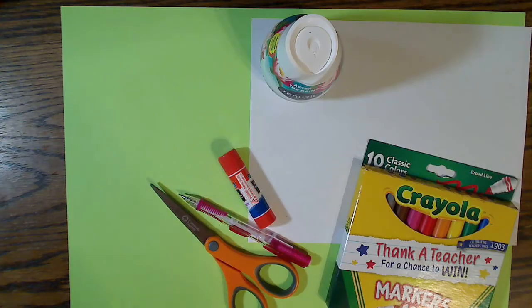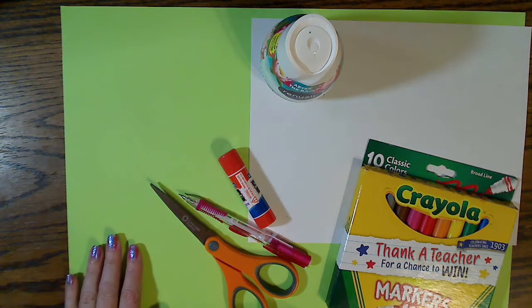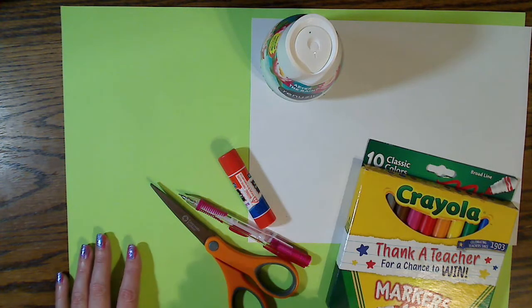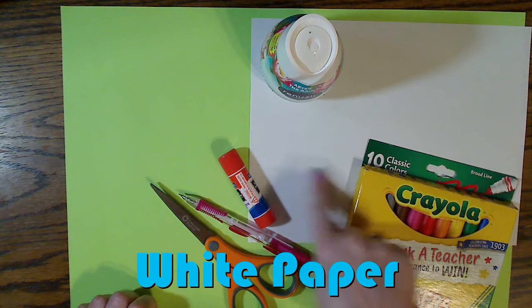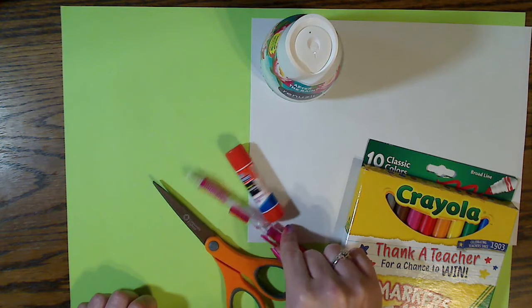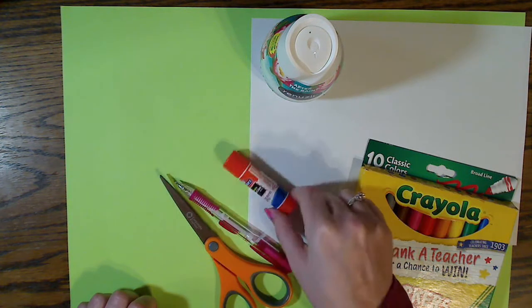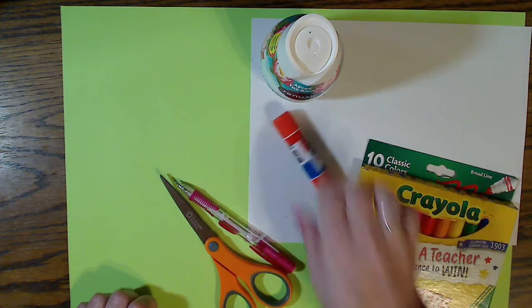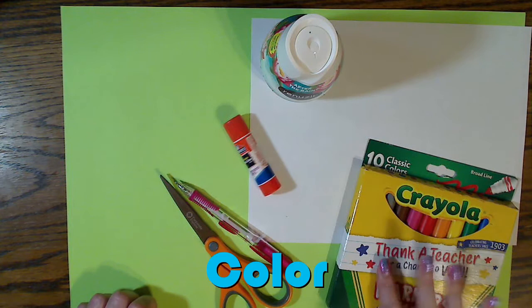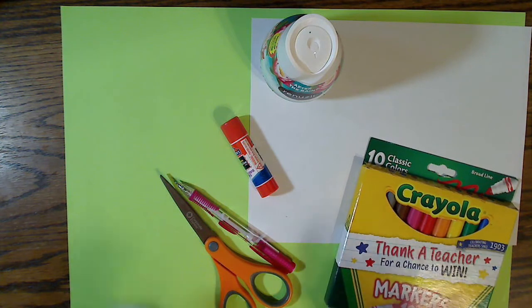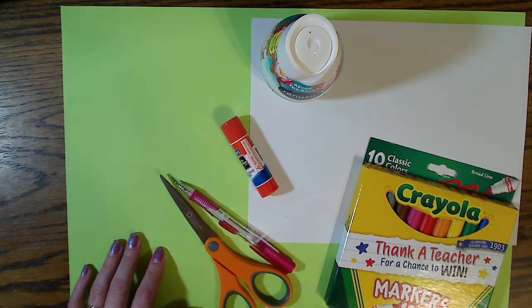So here are my supplies that I'm going to be using laid out today. You're going to need some kind of background piece of paper. If you don't have construction paper it can be just white paper. Then I do have this white paper that I'm going to be drawing on. You're going to need something to cut with, something to draw with. This is a mechanical pencil. You're going to need some kind of glue, whatever glue you have on hand, and then something to color with. The colors do not matter. They can be crayons, color pencils, markers, pens, anything. I'm just going to be using markers today.